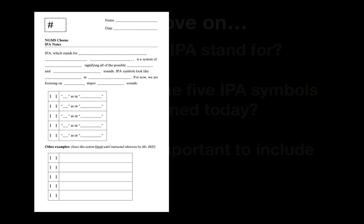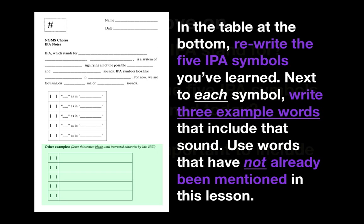There's one more thing to note on your worksheet. You have one more table at the bottom that's blank. And here's what you're going to do with that as a little homework assignment. In the table at the bottom, I want you to rewrite all five of the IPA symbols that we learned in this lesson today. And then in that open space next to each symbol, I want you to come up with three example words that include that sound. And I want you to come up with new words.